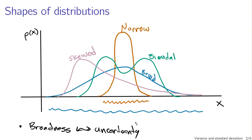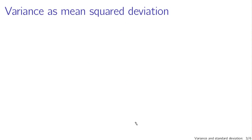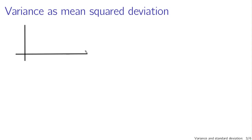This is fundamental to quantum mechanics. So how do we quantify it? In statistics, the broadness of a distribution is called the variance. Variance is a way of measuring the broadness of a distribution.